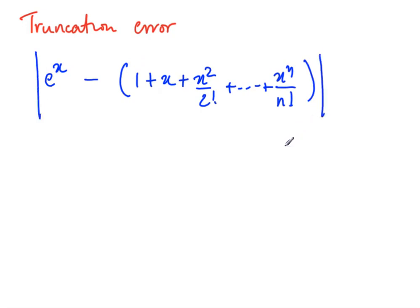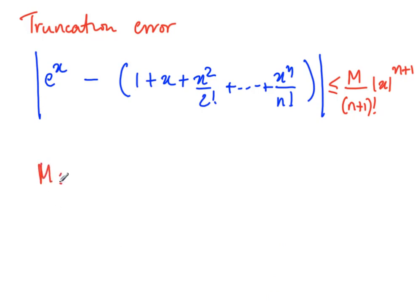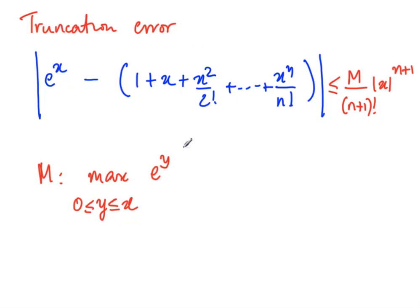In some cases like this one, mathematicians have calculated an estimate: the truncation error is always less than or equal to M divided by (n+1) factorial, times the absolute value of x raised to n+1. Here M is the maximum value of e^y for all y ranging between 0 and x. If you can estimate the maximum value of e^y between 0 and x, you plug it in and get an upper bound for the error up to n terms.